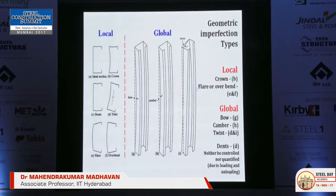Imperfections are basically deviations from actual geometry — two types. On the right side are the global imperfections: three types — bow, camber, and twist. Bow is minor axis bending. Camber is major axis bending. Twisting is when you apply torsion. On the left side you have crown.